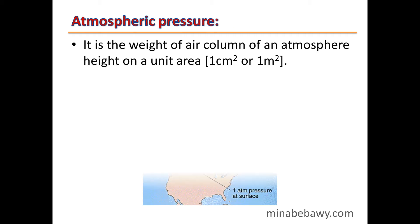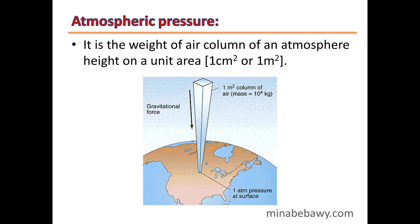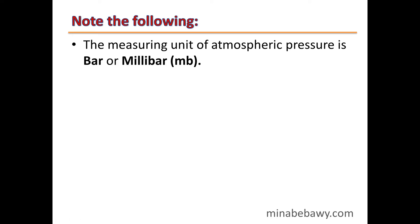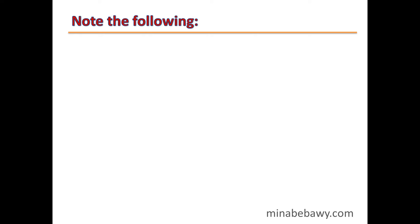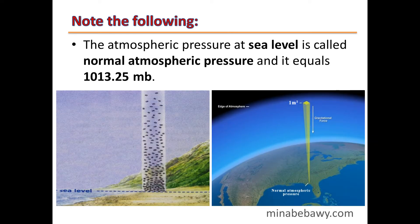Atmospheric Pressure is the weight of an air column of atmospheric height on a unit area, either 1 cm² or 1 m². The measuring unit of atmospheric pressure is bar or millibar (mb), where 1 bar equals 1,000 mb. The atmospheric pressure at sea level is called Normal Atmospheric Pressure, and it equals 1013.25 mb.